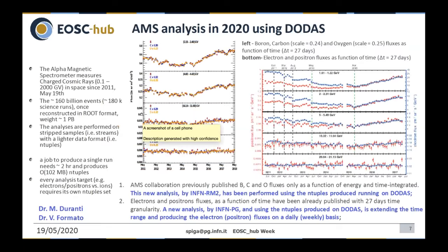Another example is very recent activity by the Alpha Magnetic Spectrometer analysts. There are two analyses currently in 2020 that will be updated with more statistics and more information that the experiment has collected, and both will be carried out using resources provided through DODAS.